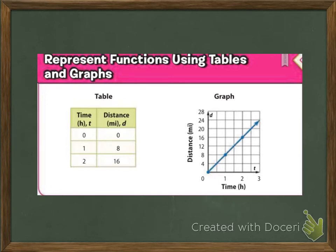Represent functions using tables and graphs. We have a table where time in hours uses T and distance in miles uses D. The graph shows zero and zero; after one hour they've gone eight miles; after two hours, sixteen miles. You can see those three points graphed, and this is a linear equation because we're going to go in a straight line. Always plot three points to confirm that.